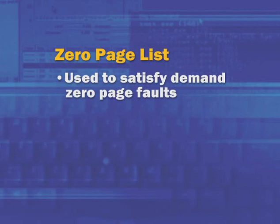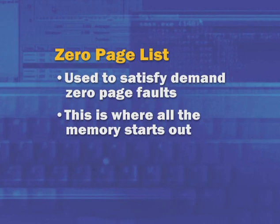The zeroed pages are placed on the zero page list, which is used to satisfy zero page faults. When an application allocates private data that isn't going to be immediately overwritten with data from disk, Windows fetches the page from the zero page list because it's already zeroed and the application can reuse it. The zero page list is where all physical memory starts when the system boots.